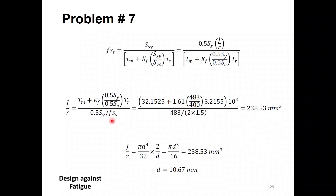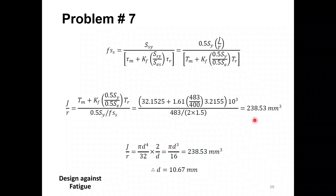With all the information — yield strength, endurance strength, mean and reversing torques, Kf = 1.61, and factor of safety = 1.5 — we solve for J/R as the unknown from the Soderberg equation. For a solid circular cross-section, J/R equals πd³/16. Equating this to the value from the Soderberg equation gives the shaft diameter d = 10.67 mm.